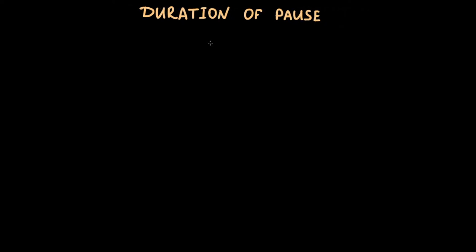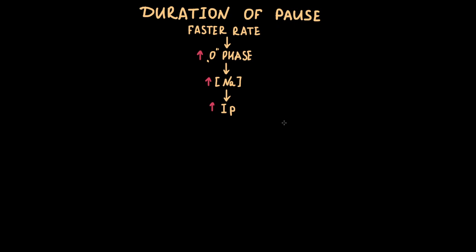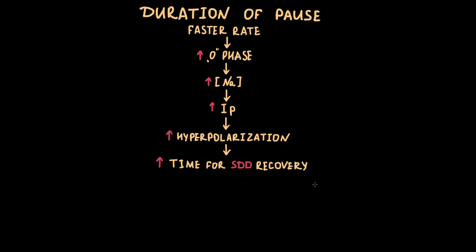The duration of the pause between fast sinus rhythm and the rising of a latent pacemaker depends on the heart rate before the pause. A faster heart rate means more phase zero events per unit of time, therefore greater sodium concentration inside the cell, leading to more active sodium-potassium exchange pump and more powerful IP current, causing stronger hyperpolarization. In case of overdrive termination, this leads to more time for the sodium-potassium pump to eliminate the sodium excess and recover the SDD slope. As a result, a faster previous rate means a greater pause.